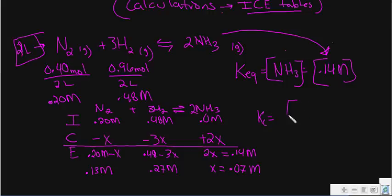And we know the concentration of the products because they told us. And that was 0.14 molar. And now, since we've done our ice tables, we know the concentration of the reactants as well. And whoops, this is squared because that's a 2 right there.